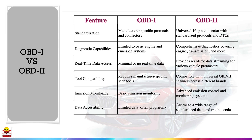In this slide, I tried to capture the key differences between OBD-1 and OBD-2 systems. OBD-1 systems featured manufacturer-specific protocols and connectors, meaning each vehicle brand required its own unique diagnostic tool, making the process cumbersome and less efficient. In contrast, OBD-2, mandated in the U.S. from 1996 onwards, brought standardization with a universal 16-pin connector and standardized diagnostic trouble codes, allowing for interoperability across different vehicle makes and models.